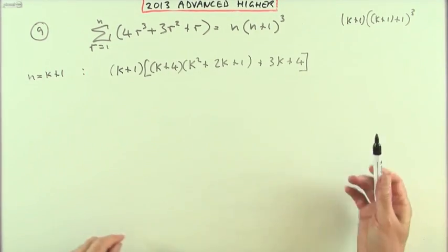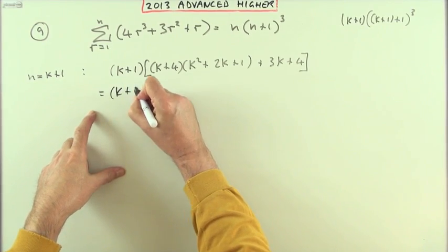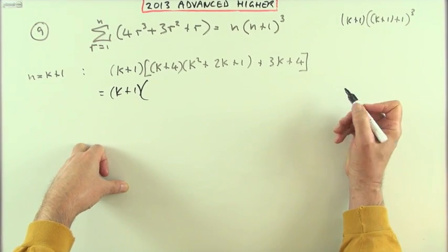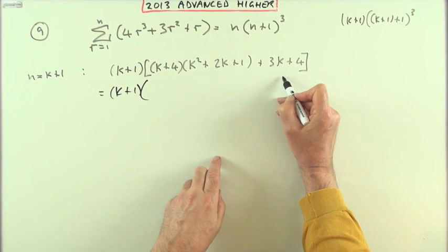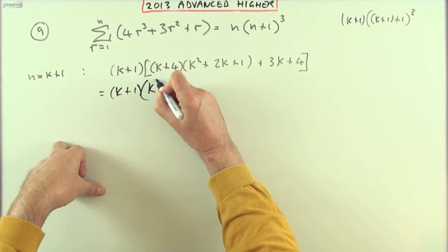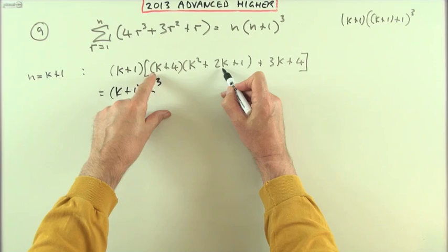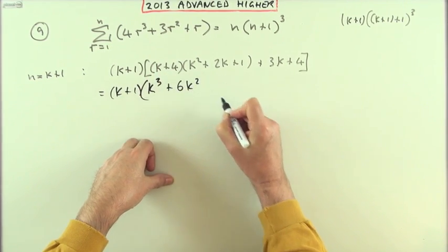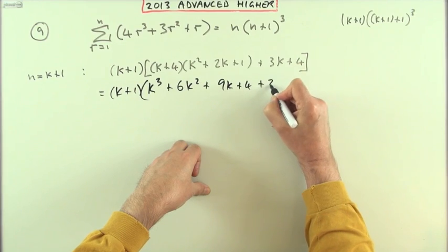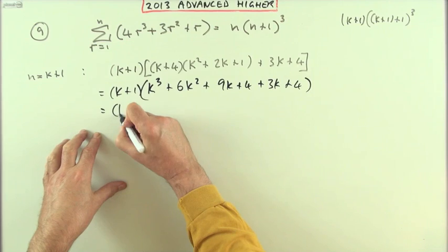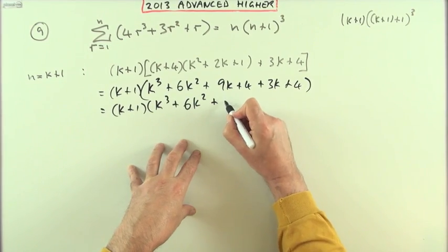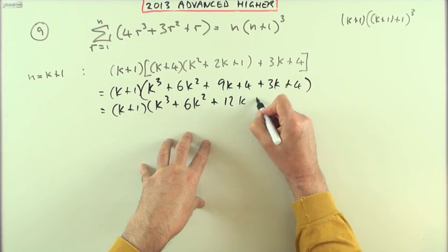Putting this up here to get more space and a fresh bend. What we've got is (k+1) times, and unfortunately I can't see another way but to put this out to the full cubic expression. Multiplying out: k³ plus (2+4 is) 6k² plus (1+8 is) 9k plus 4, plus the 3k plus 4. So that gives me (k+1) times (k³ + 6k² + 12k + 8).